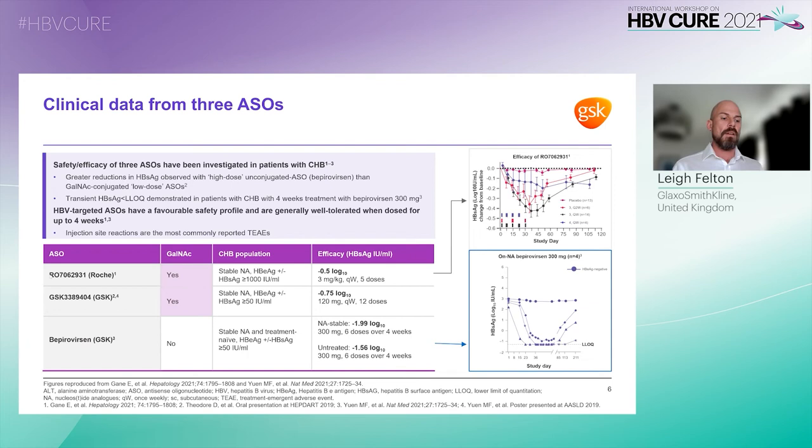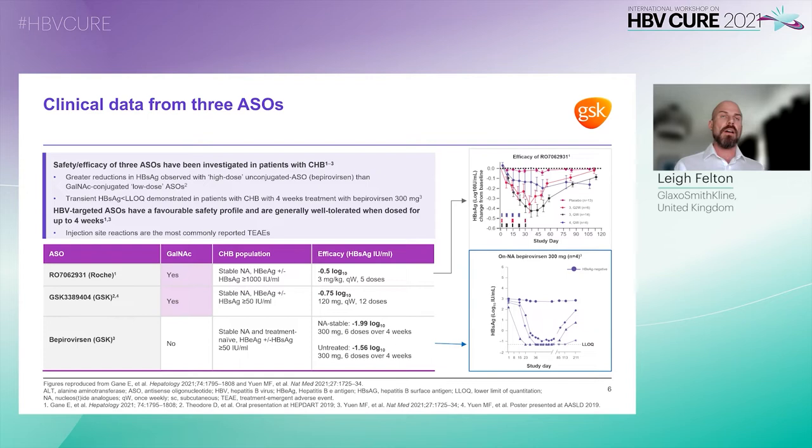New clinical data on safety and efficacy has been published for Roche's RO7062931 and GSK's bepirovirsen, and is summarized in the table here alongside previously published data for GSK3389404. In summary, greater reductions in HBsAg have been observed with higher dose unconjugated ASO bepirovirsen than for GalNAc conjugated ASOs.